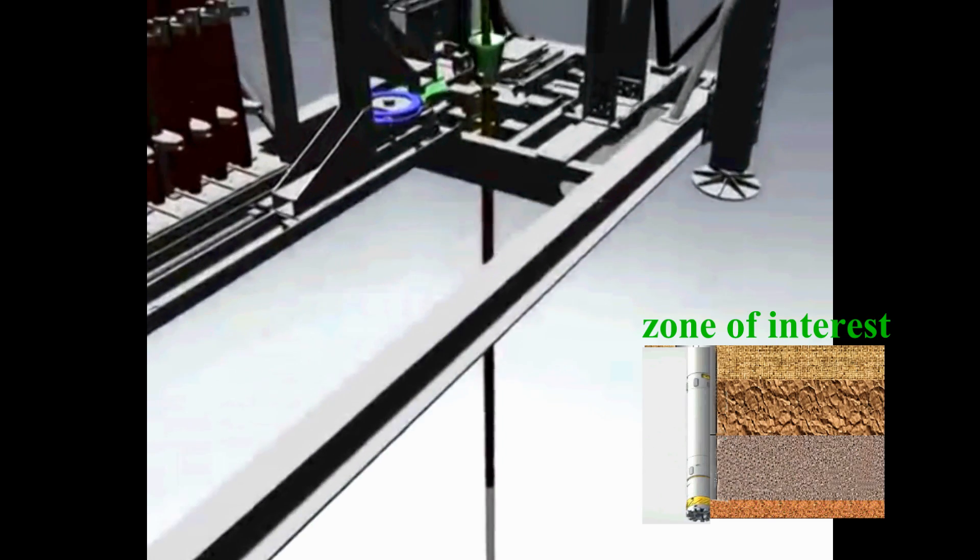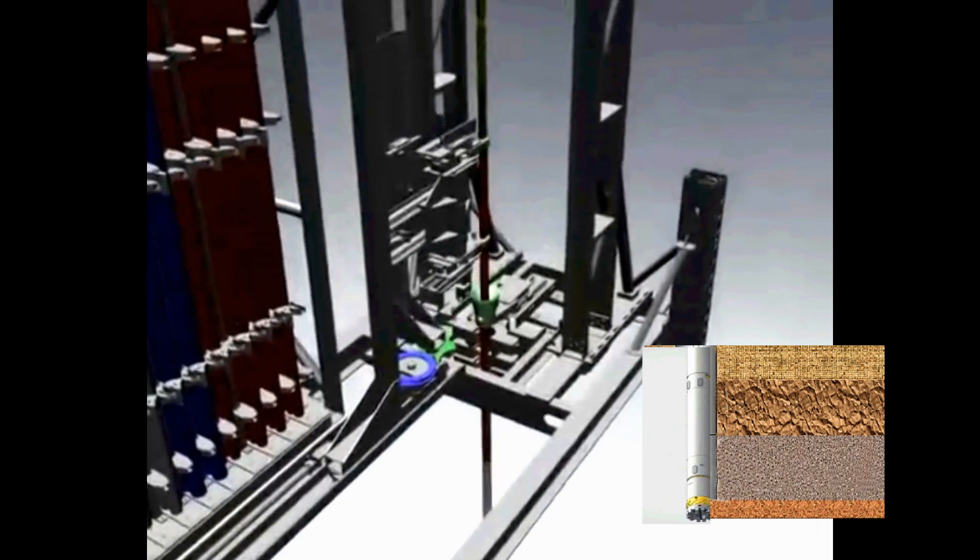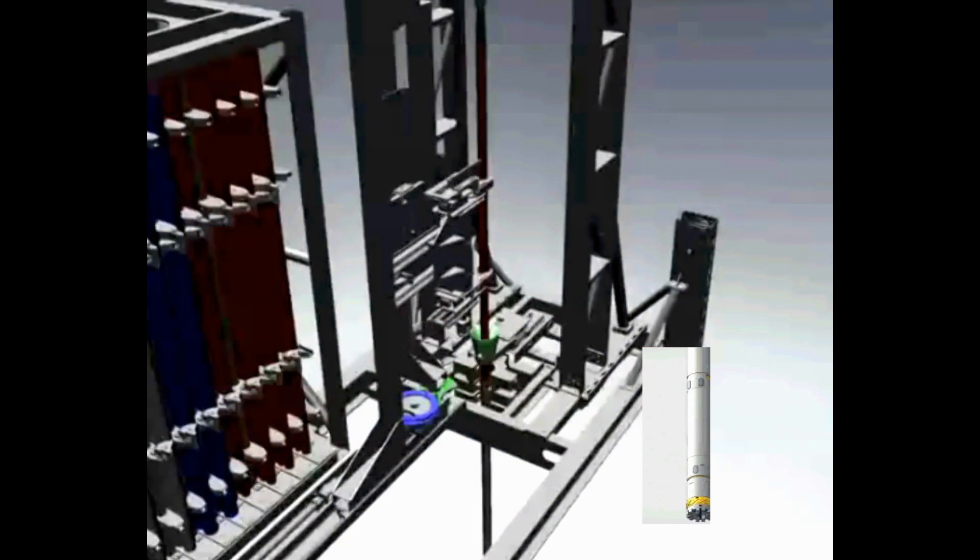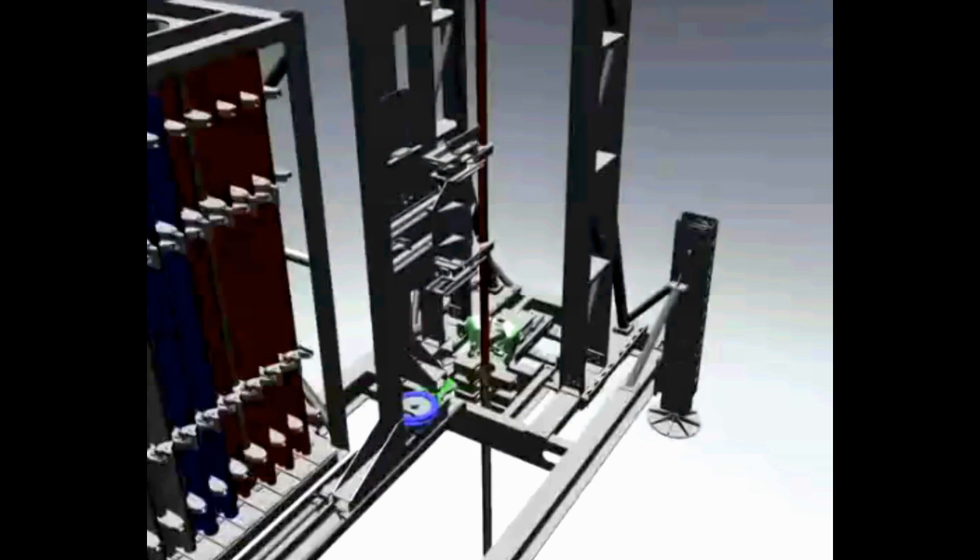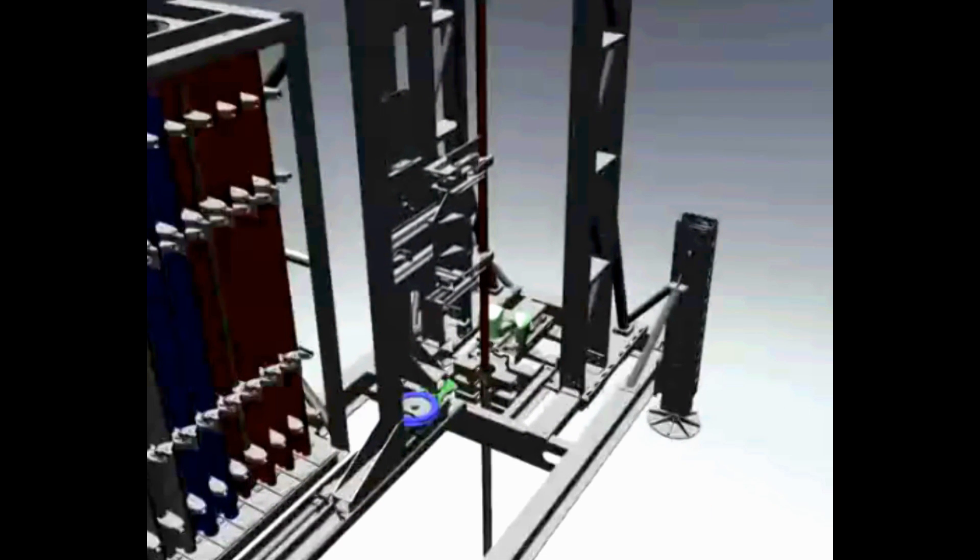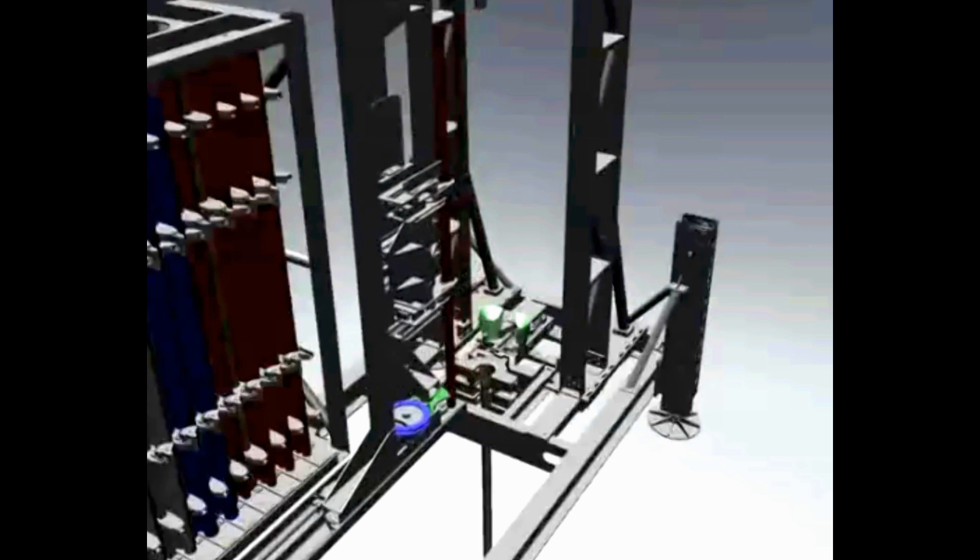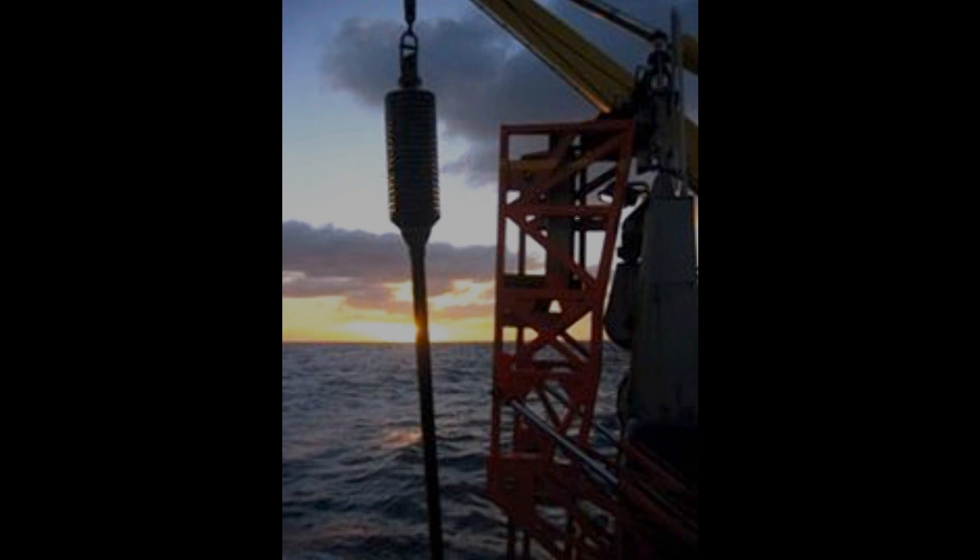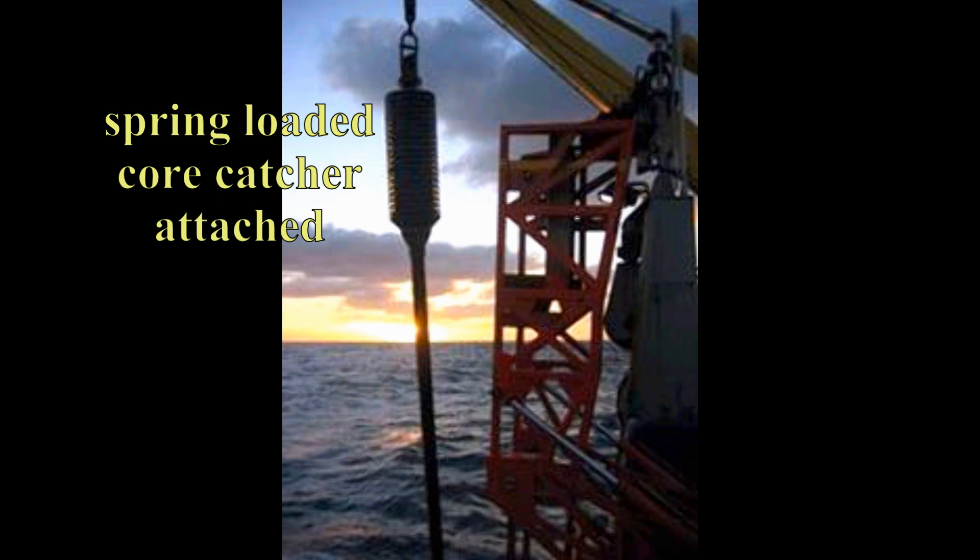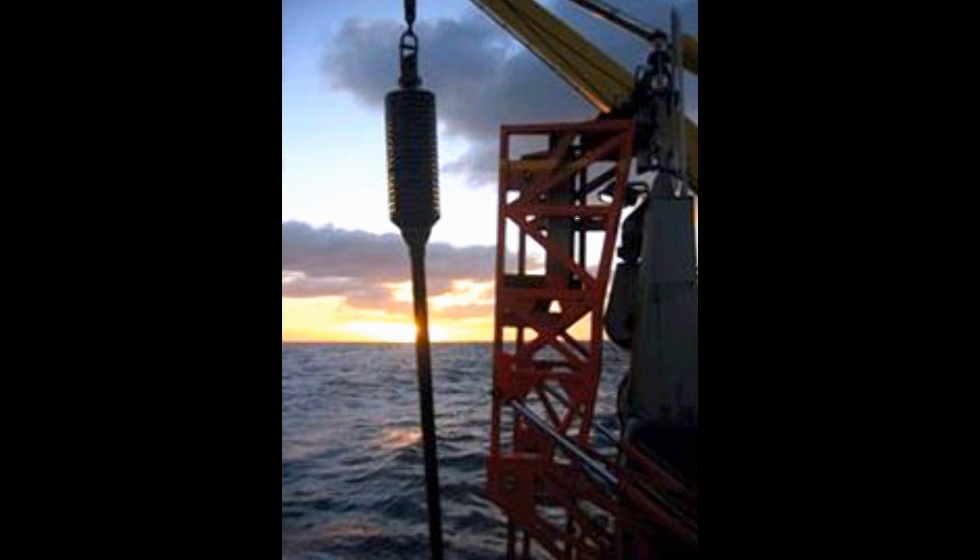When the zone of interest has been penetrated or when the core barrel is full with a sample of about 30 feet long, the string with the barrel that contains the core is pulled up to the surface with the spring-loaded core catcher attached. Once the core is retrieved, it is taken to the laboratories for core analysis.